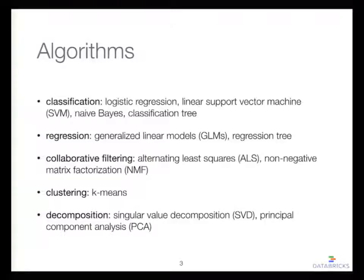For machine learning algorithms, we cover basic linear methods like logistic regression and linear support vector machine, naive Bayes, and decision tree for both classification and regression. We implement alternating least squares for collaborative filtering, and recently added an option for non-negative constraints giving you non-negative matrix factorization. For clustering we support k-means, and for dimensionality reduction we have singular value decomposition and principal component analysis.